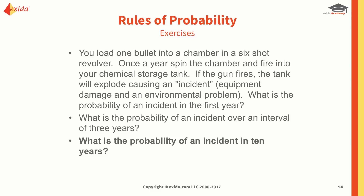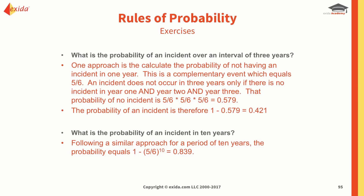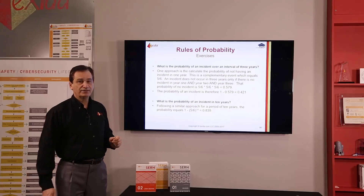What's the probability of an incident in ten years? Using the same approach, it would be 1 minus 5/6 to the power of 10. The first year is 1/6. For three years using the 5/6 approach — remembering to subtract from 1 — we get a 42%, or 0.42, probability of an incident. For ten years, 1 minus 5/6 to the power of 10 gives an 84% probability. The longer the time period, the more likely we are to have an incident.